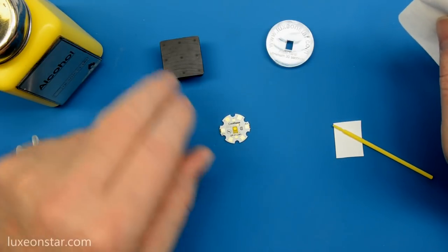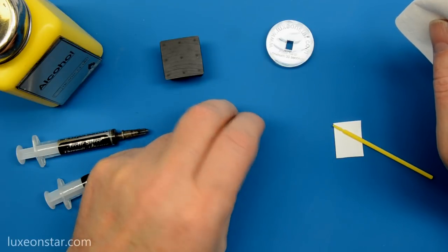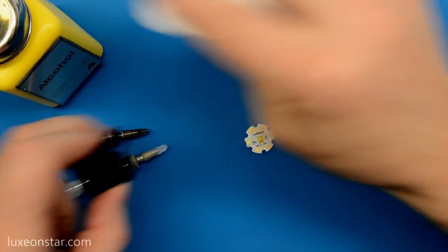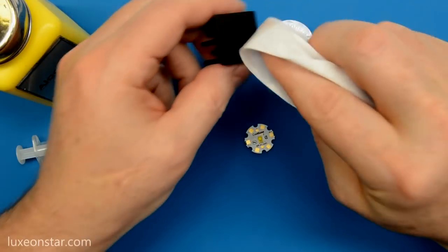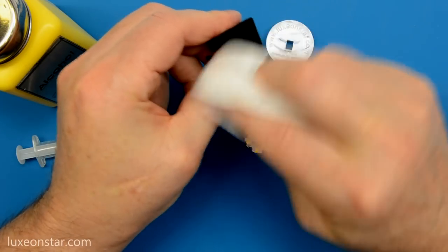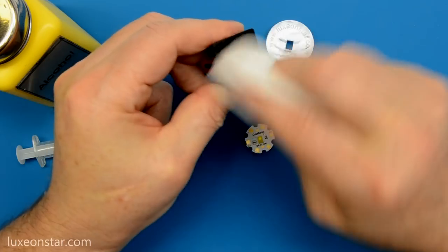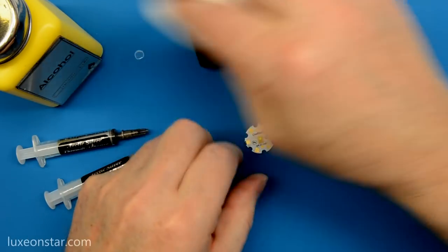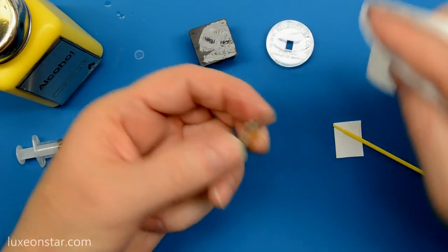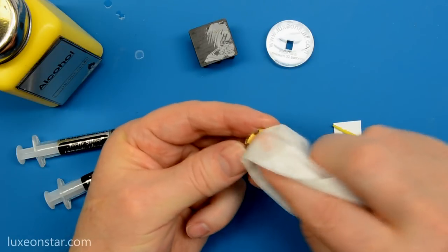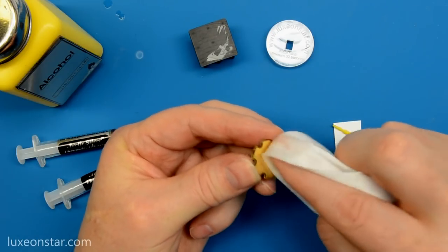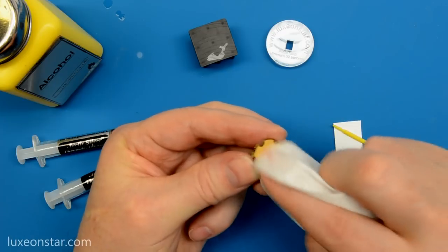You want to start by ensuring that the surfaces are thoroughly clean and free of any oils and greases. So we're going to clean that off with isopropyl alcohol, and we'll clean off the LED, the back of the LED as well. Make sure both surfaces are impeccably clean.